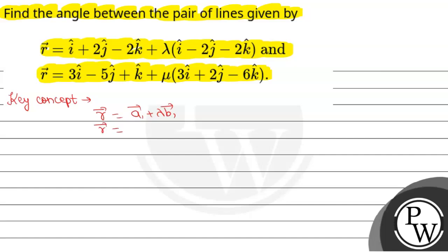Vector r is equal to vector a2 plus lambda vector b2. So let's find the angle.